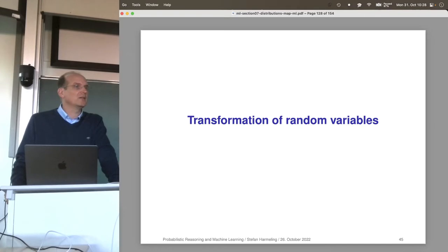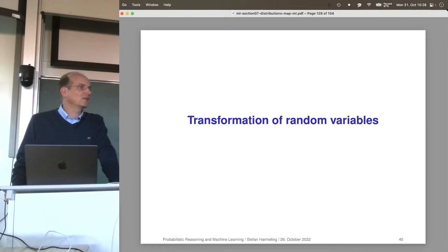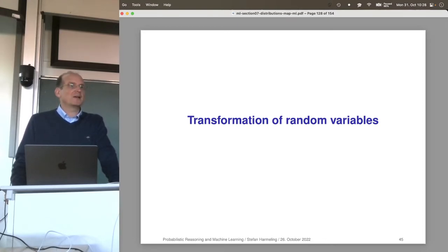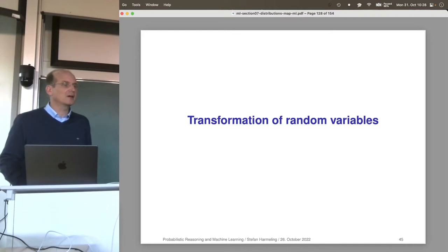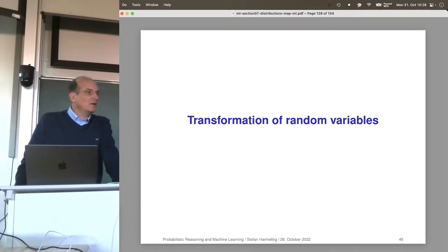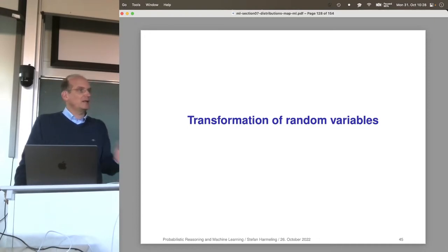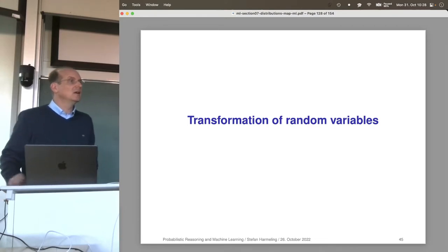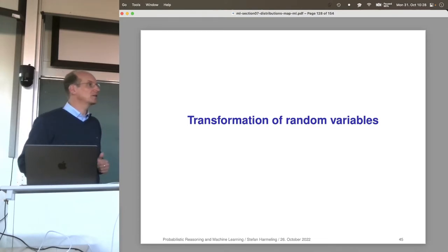We've already seen some transformations in the lecture about Gaussian distributions — mappings of vectors that are multivariate Gaussian distributed. We looked at linear affine transformations. Given a random vector with a multivariate Gaussian distribution, how does the distribution change if we apply a linear transformation? There's a theorem that says it's again a Gaussian distribution, but the covariance structure changes.